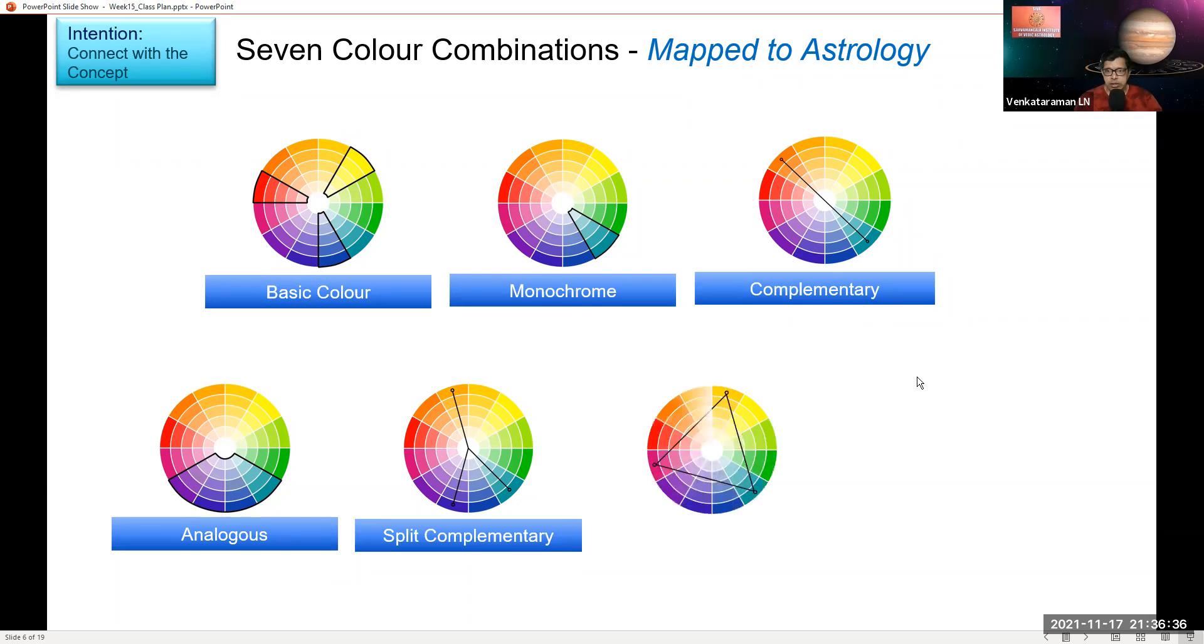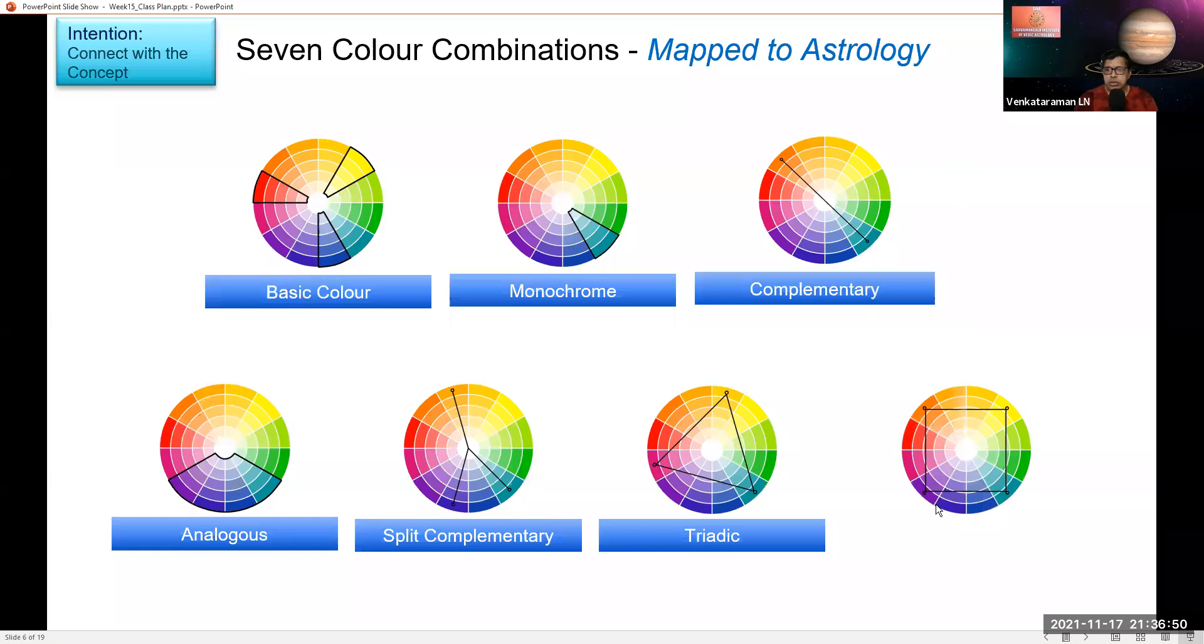And if we see this, we have triadic combination of colors. That means you choose such colors that they form a triangle when you join these color points here. And there's another one, seventh one, it's called tetradic. That means you choose four colors in this wheel so that there's a square form when you join the points.